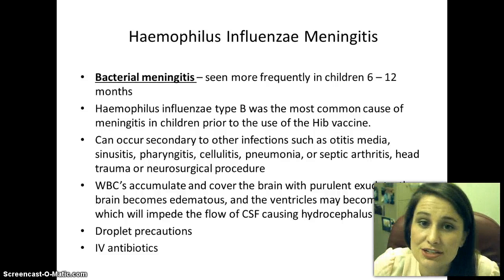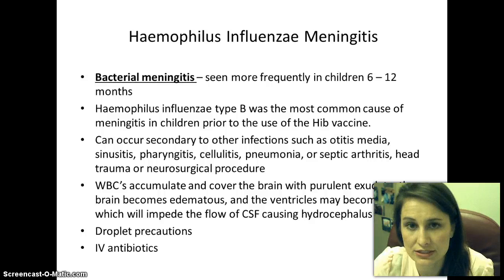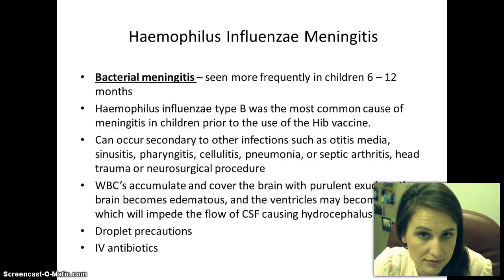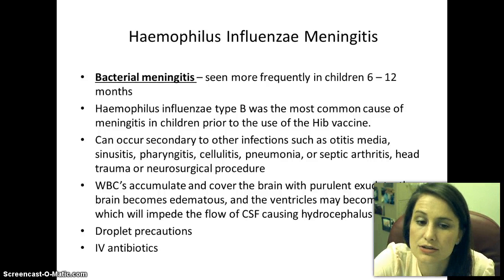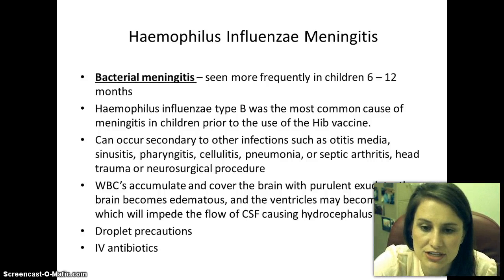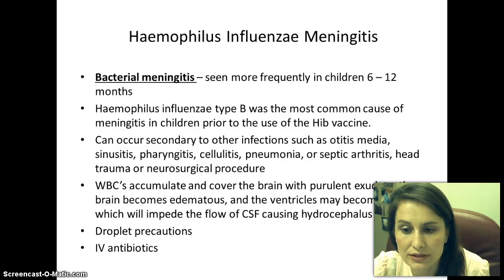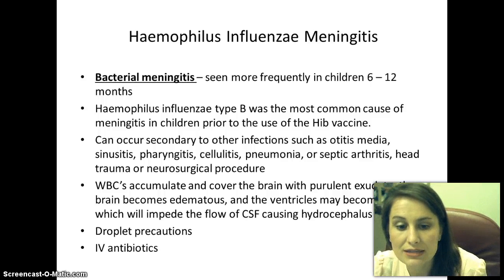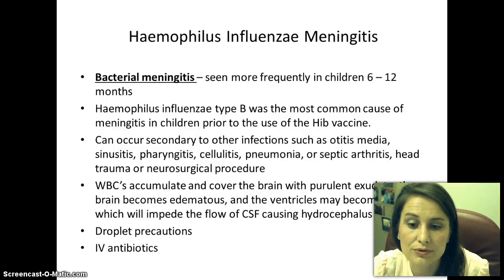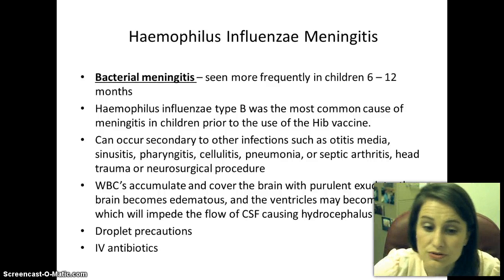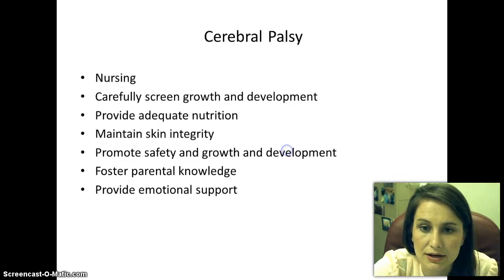We have seen less bacterial meningitis now that we have the Hib vaccine. It is often seen frequently in children from six to twelve months. Bacterial meningitis can occur secondary to other infections such as otitis media, sinusitis, pharyngitis, cellulitis, pneumonia, septic arthritis, head trauma, and neurosurgical procedures. White blood cells accumulate and cover the brain with a purulent exudate — the brain becomes edematous and the ventricles become blocked. When the ventricles are blocked, it can impede CSF flow, causing hydrocephalus. These patients will be on droplet precautions and will receive IV antibiotics.